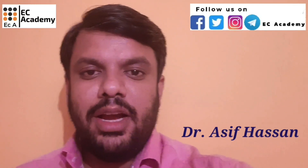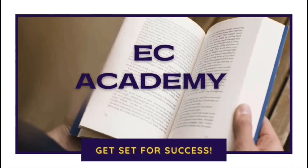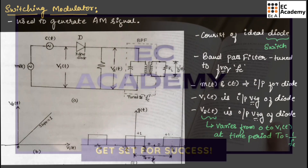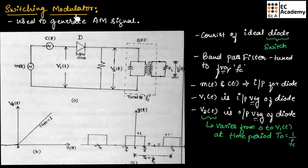Hello friends, welcome to ESA Academy. In this lecture, let us understand switching modulator. Switching modulator is used to generate the amplitude modulated signal — the AM signal. Here, a diode is used that is acting as a switch, and this circuit is producing the AM signal. That's why it is known as switching modulator.